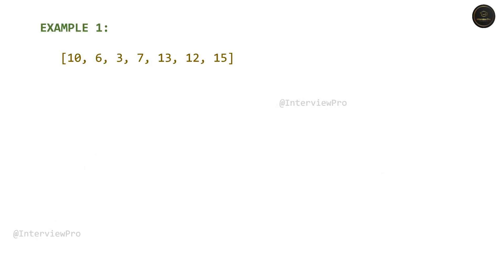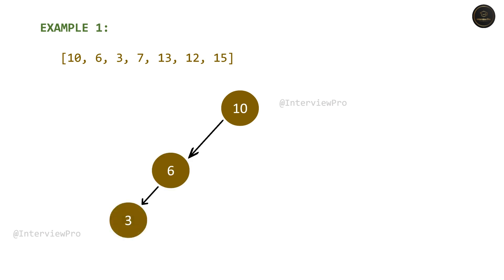Let's take an example with an array of integers and try to form a binary search tree. When we say pre-order, it's root, left, and right. So first we have 10, we'll insert it as the root. Then we have 6, then 3 — we've inserted the root node and the left node. Then comes the right node, which is 7. Now we have node 13, which comes to the right of 10. Then we have 12, which goes to the left since it is less than 13.